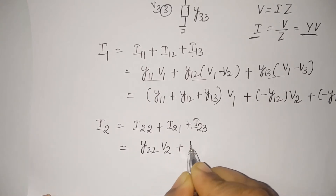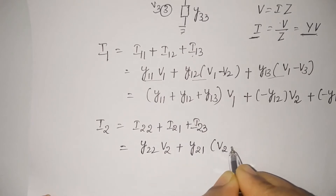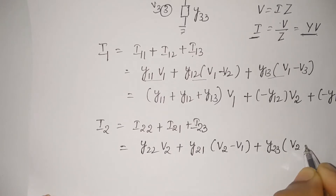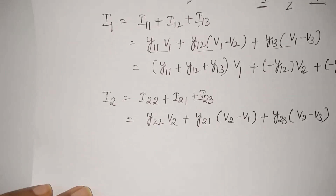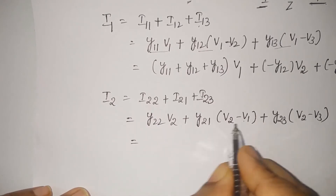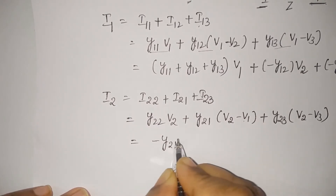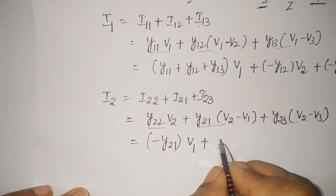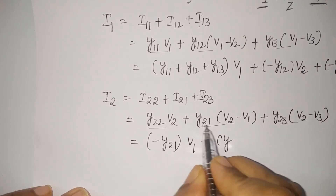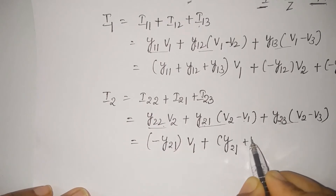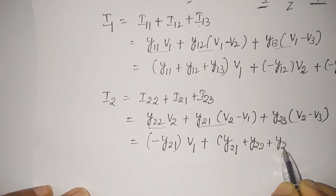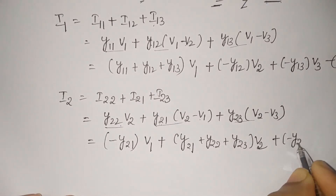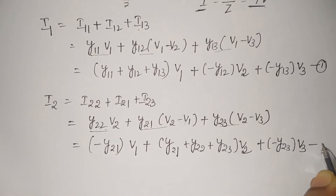By the inspection method: I2 equals Y22·V2 plus Y21·(V2 minus V1) plus Y23·(V2 minus V3). Separating the terms: I2 equals minus Y21·V1 plus (Y21 + Y22 + Y23)·V2 minus Y23·V3. Call this Equation 2.